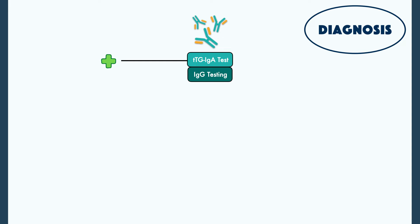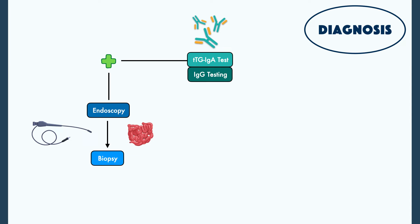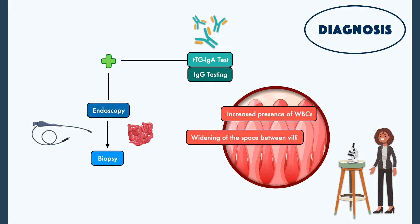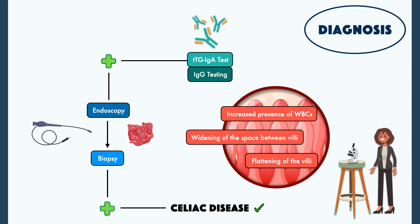A positive antibody test is suggestive of celiac disease, but it's still not considered enough to confirm it. Patients with a positive antibody test should undergo an endoscopy so a biopsy of the small intestine can be obtained. That biopsy will then be examined under a microscope by a trained pathologist, who looks for features like an increased presence of white blood cells in the mucosal cells, widening of the space between villi, and flattening of the villi. A positive TTG-IGA test and a positive biopsy can be used to diagnose celiac disease.